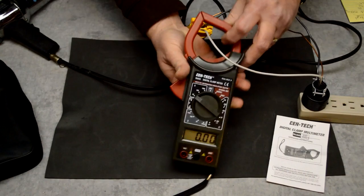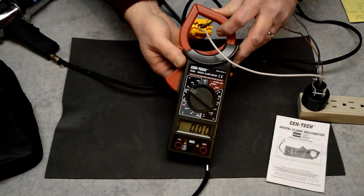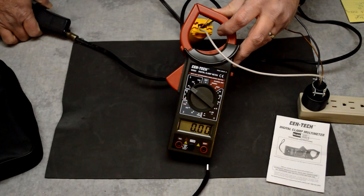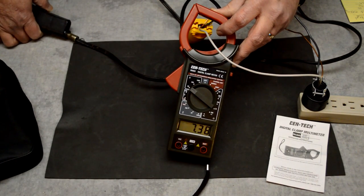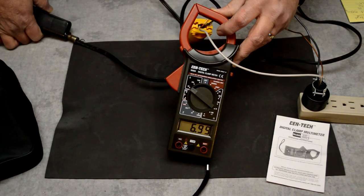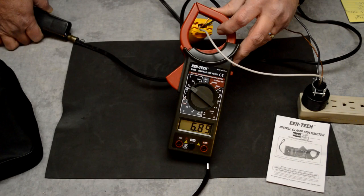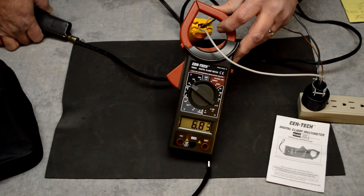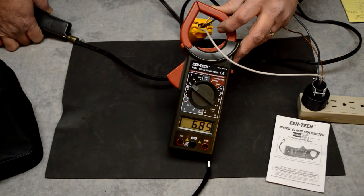So we're just clamping one wire, and leave the wire right in the center. Let's go ahead and turn on our heater here, our heat gun. Now you can see that we're doing between 6 and 7 amps, which is correct for this heat gun.